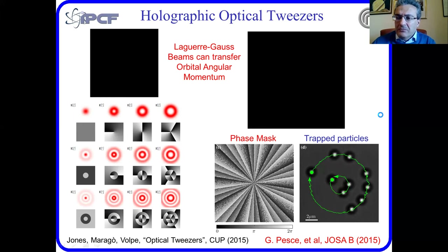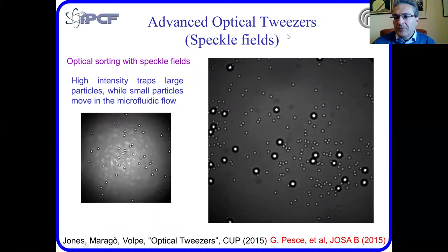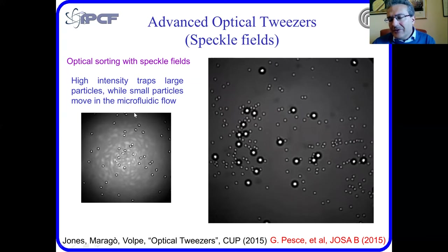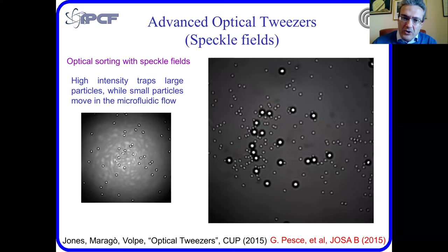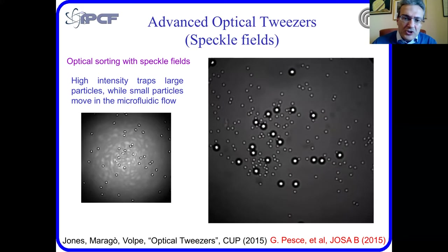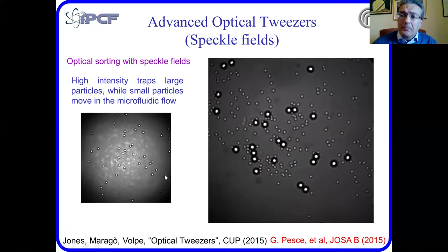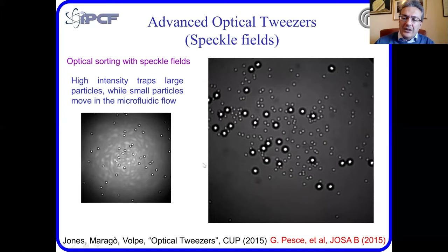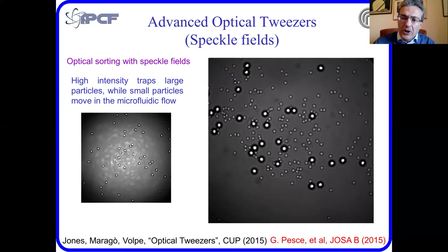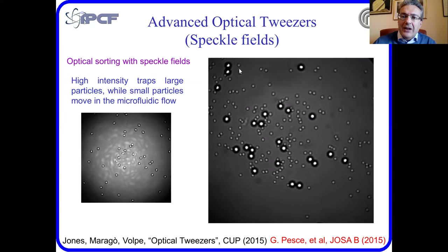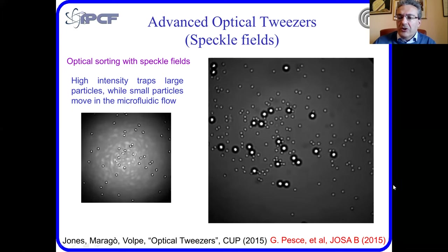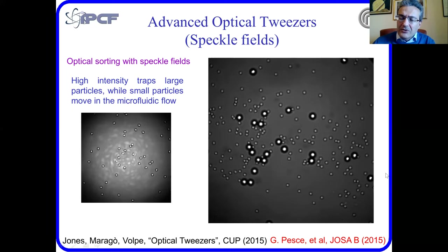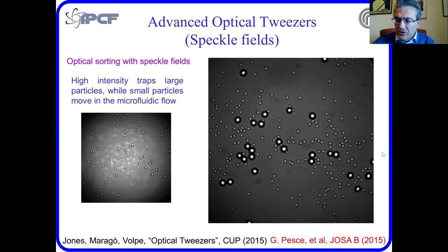Another interesting case is what is called speckle tweezers. You create a speckle pattern. To create a trap, you really need high intensity spots, and this can be done through a speckle field. This is the result: you can use a speckle field, this pattern made of high intensity spots, to trap large beads while other smaller beads are flowing in a slow flow. Basically, this type of advanced optical tweezers setup can be used as an optical sorter — you can use light and its capability to trap particles to sort larger particles from smaller particles in a fluidic flow.